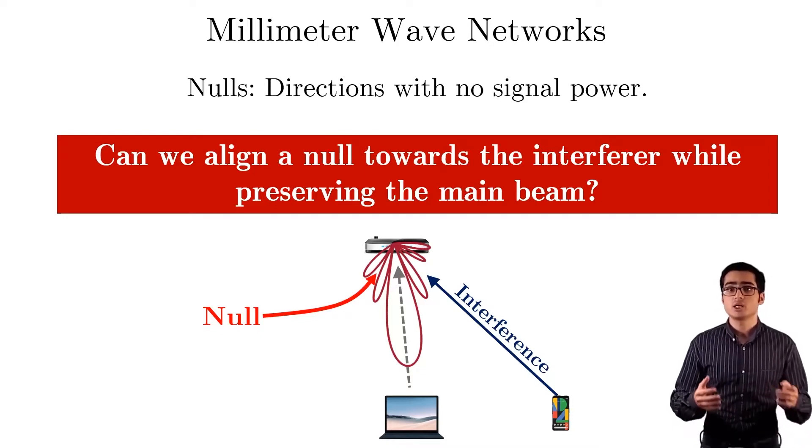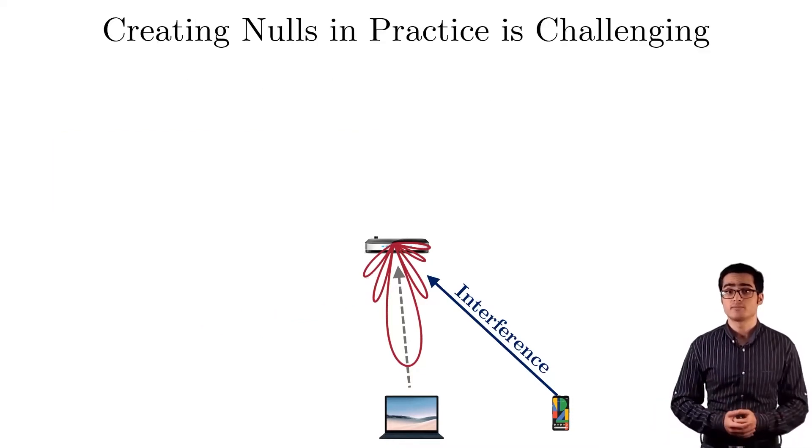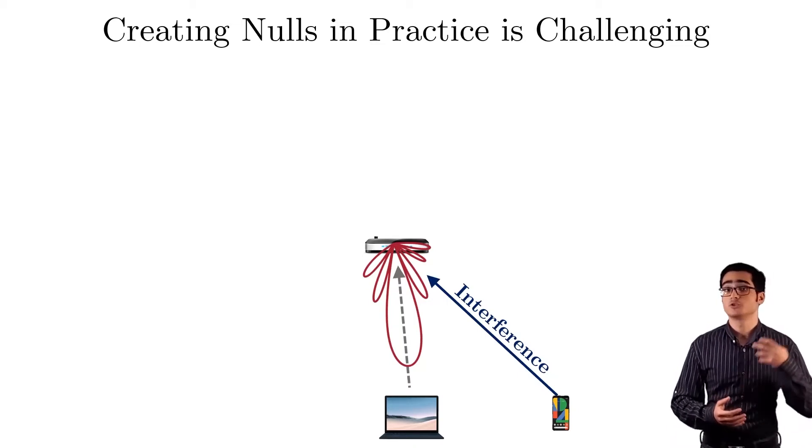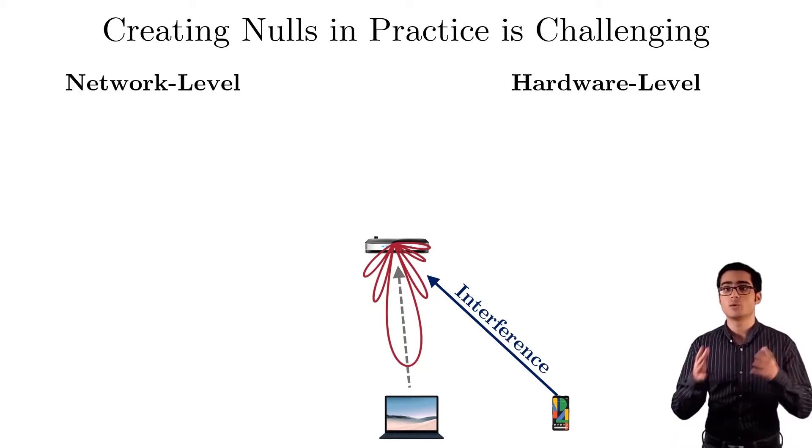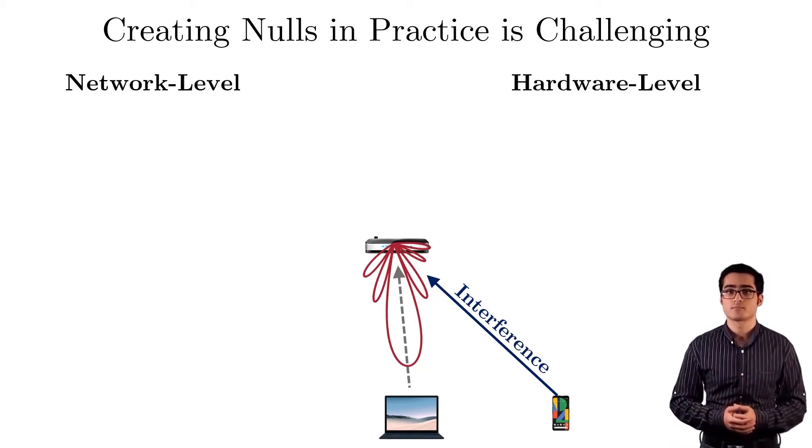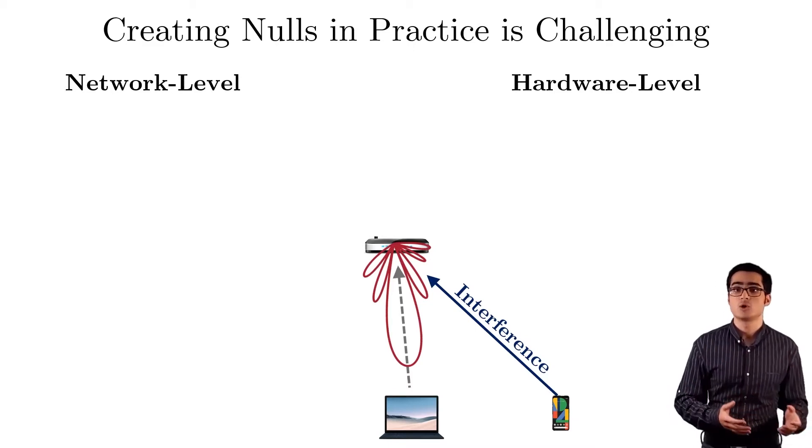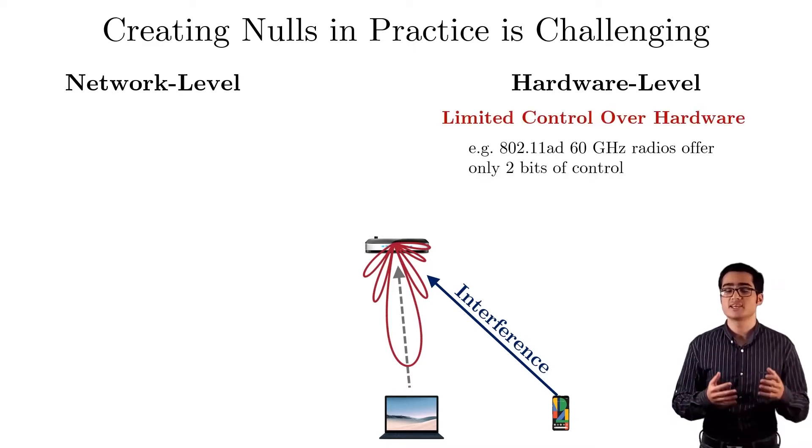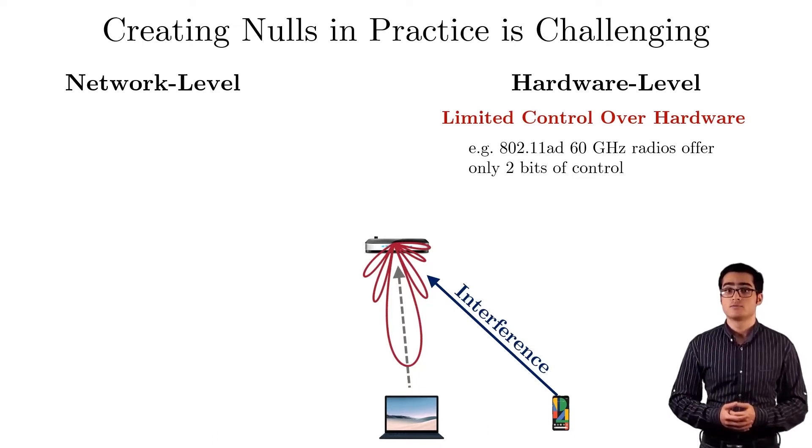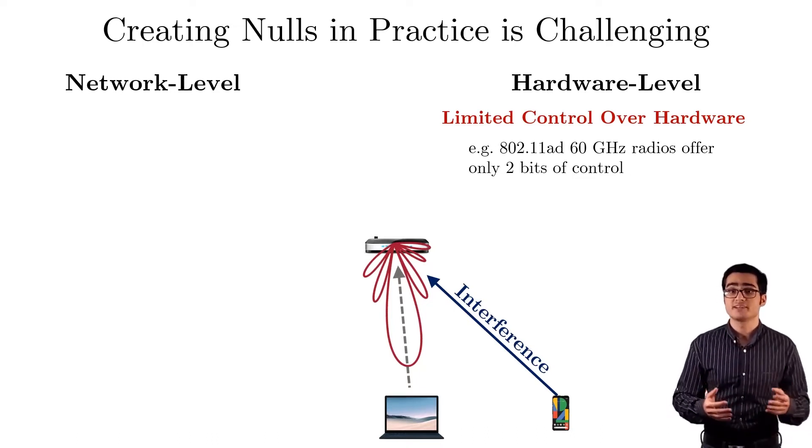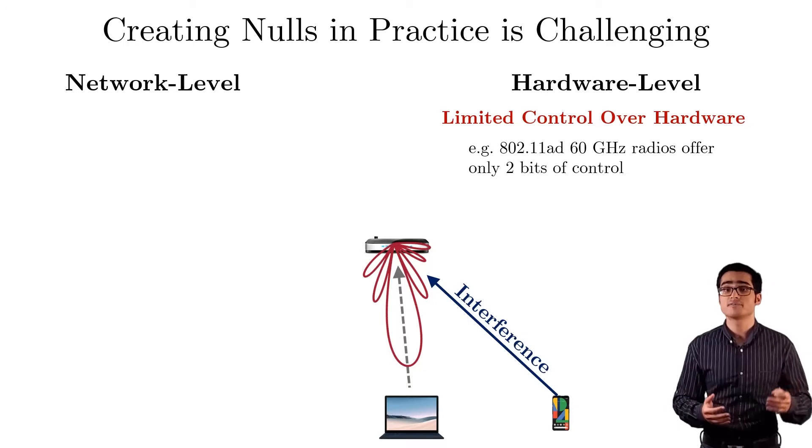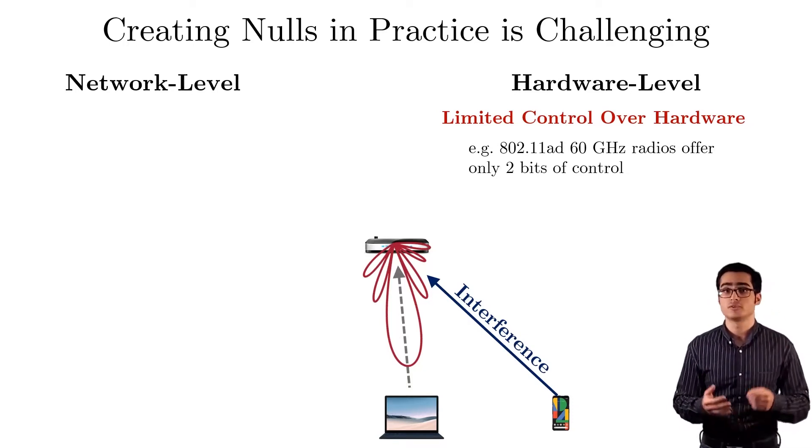It turns out that creating nulls in practice is very challenging. Challenges can be divided into two groups, hardware and network level challenges. On the hardware side, we have very limited control in setting the parameters of the beam pattern. For example, the 802.11ad 60 GHz radios offer only two bits to control these parameters.